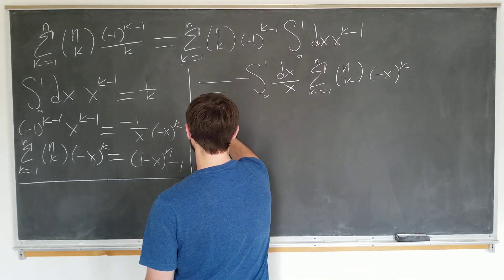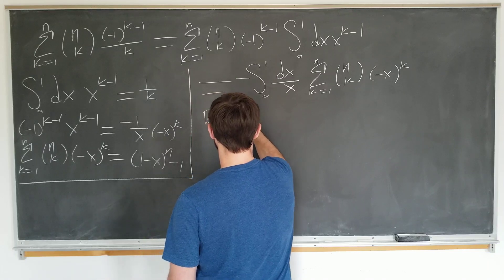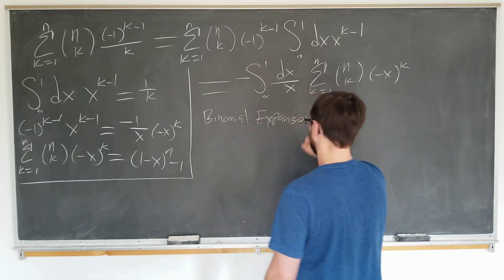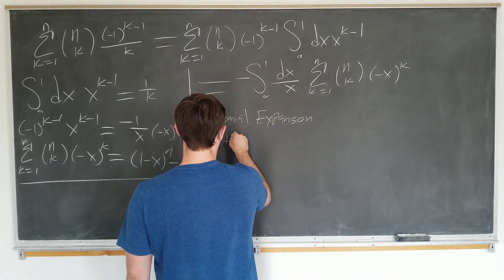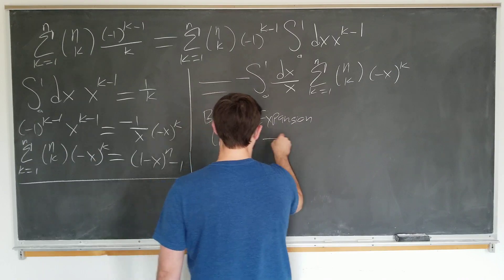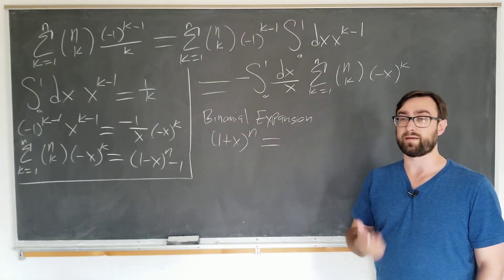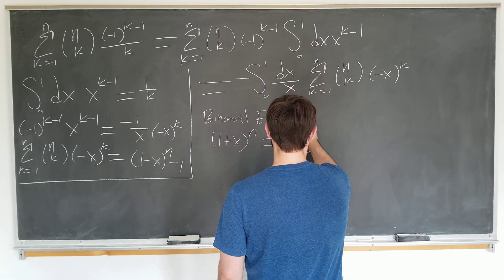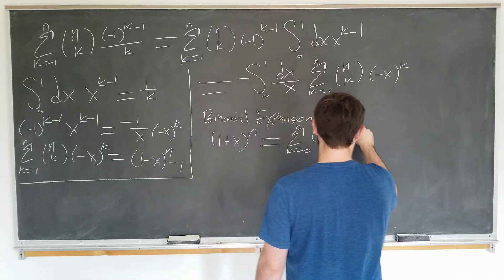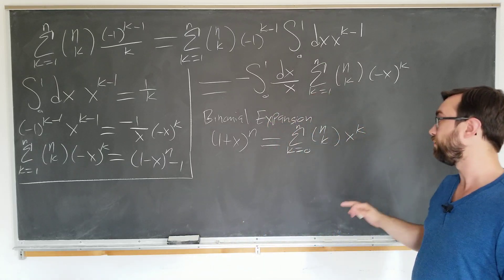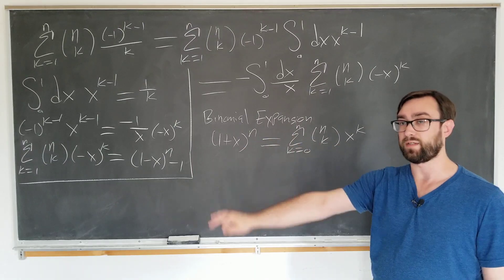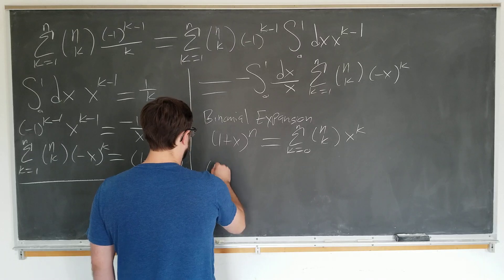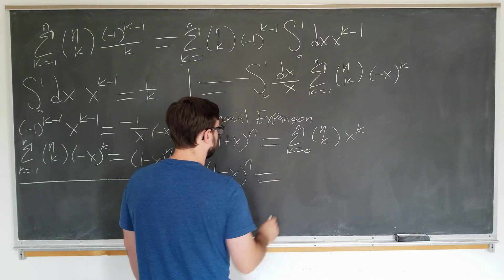This is true because the binomial theorem or binomial expansion as we call it in physics states that if we have a quantity one plus x to the n, and n is typically taken to be small in physics but we're doing math here so x is arbitrary, is the sum as k goes from zero to n of n choose k, x to the k. This is not quite what we want. We have the index starting at zero instead of one here and we have an x instead of a minus x so we can fix that. So one minus x to the n is now equal to, where we're letting x go to minus x in the expression here.